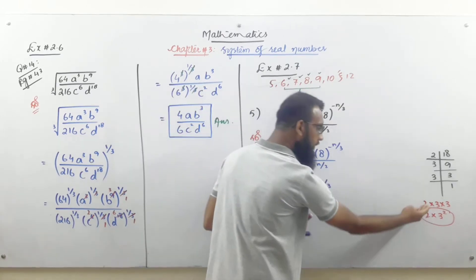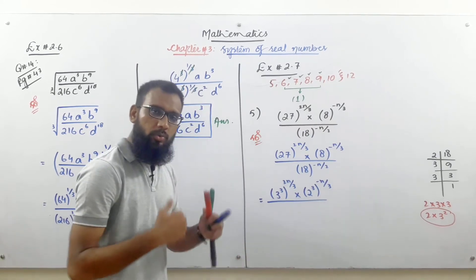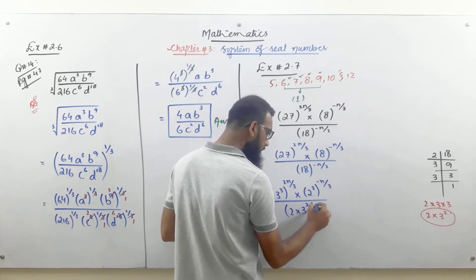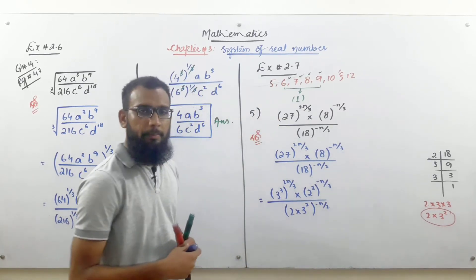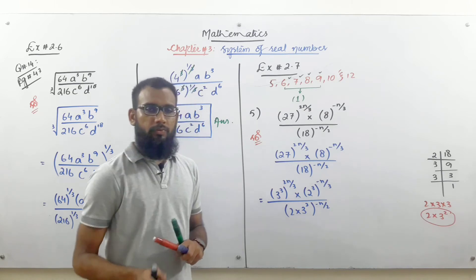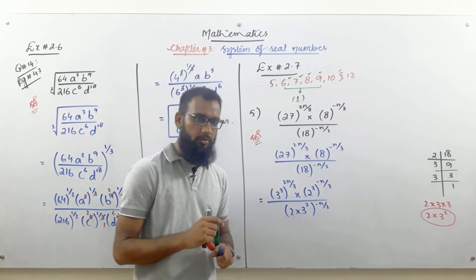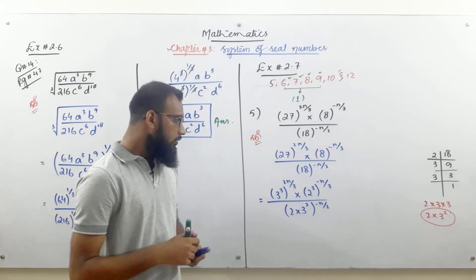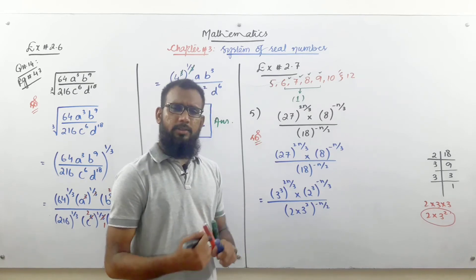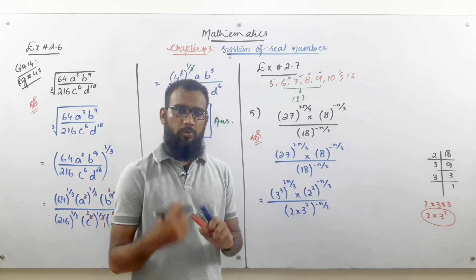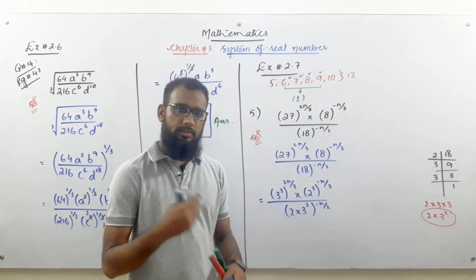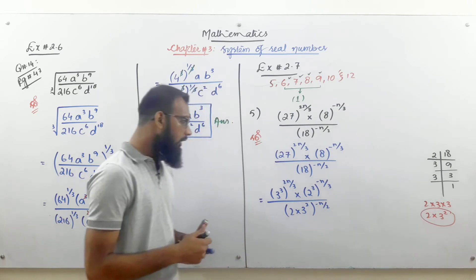For 18, its factors are 2 × 3 × 3, which is 2 × 3², so we write (2 × 3²) whole power −n/2. Now the powers outside the bracket will distribute: the inner power multiplies with the outer power for each base. If you have any confusion, write in the comment box or chat box and I will resolve your query. Please give full concentration to the board.